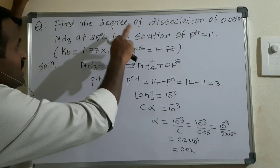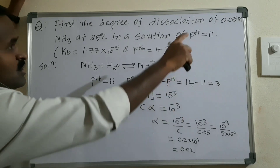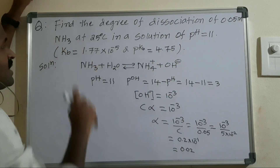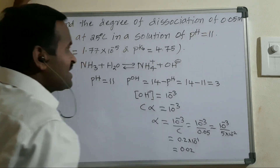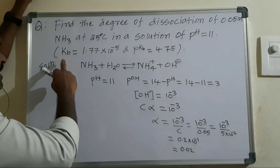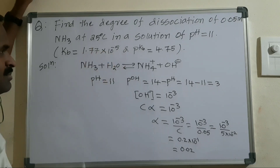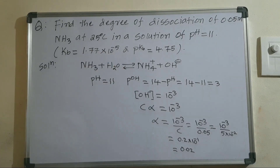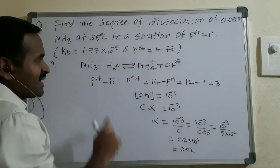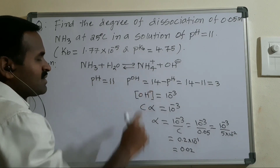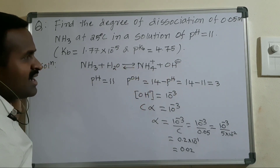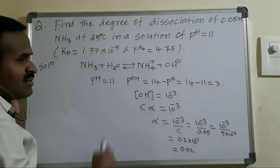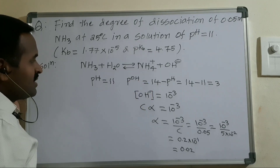The next problem: find the degree of dissociation of 0.05M NH₃ at 25°C in a solution where pH is given as 11. The Kb and pKb are also given. Ammonia dissociates into NH₄⁺ and OH⁻, establishing an ionic equilibrium — it is a weak base.